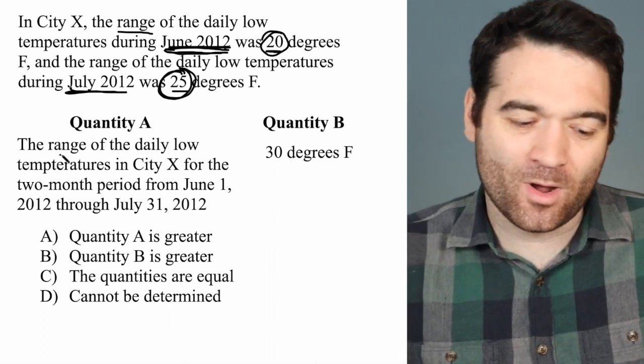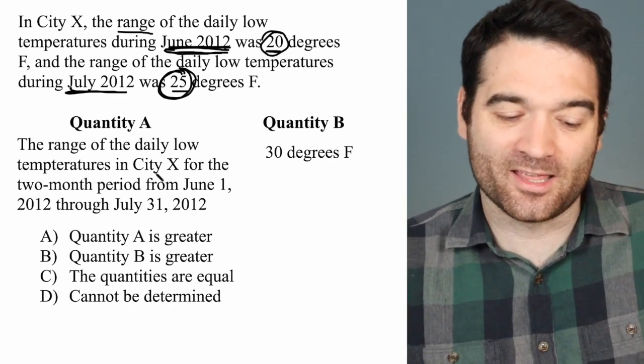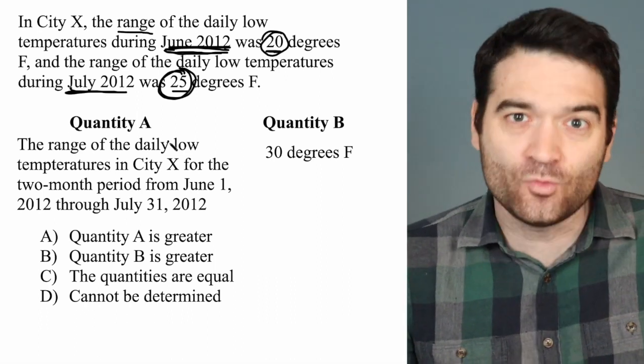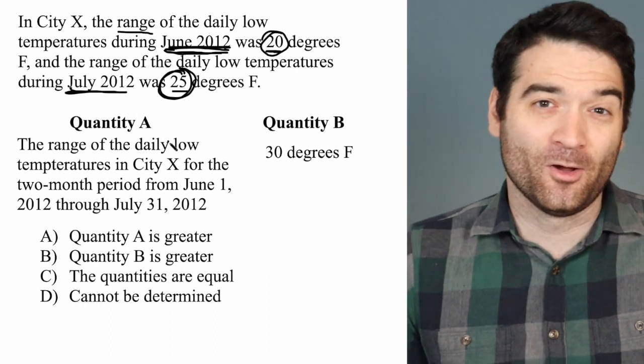So if we're looking at Quantity A here, what Quantity A is saying is, what's the range for this whole period? So if we put all the temperatures from June to July together, what would the range be?